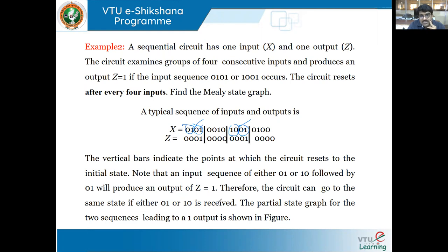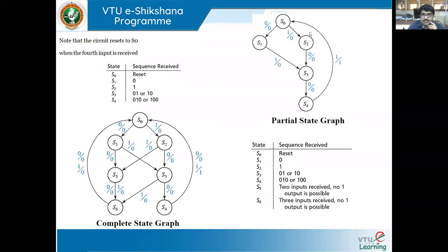The sequence 01 or 10 followed by 01 produces Z equal to 1. Therefore, the circuit can go to the same state if either 01 or 10 is received. Now we'll try to build the partial state graph and then the complete state graph. This is how exactly we proceed after looking at the guidelines, and then for Example 2 we'll move to the next slide.